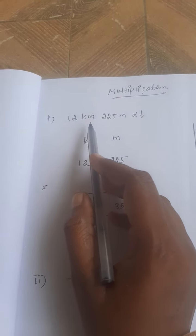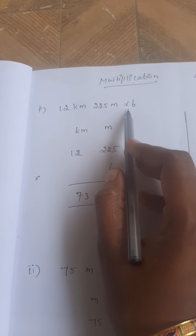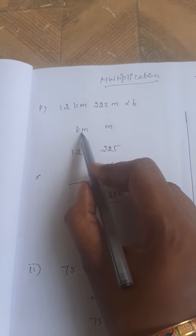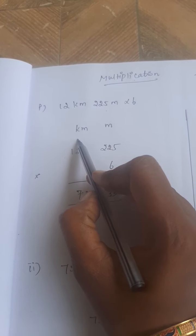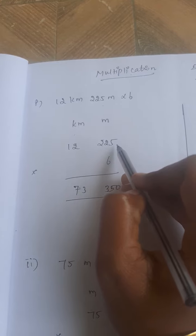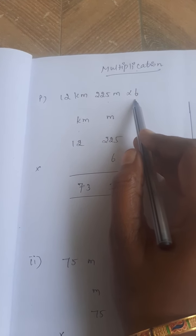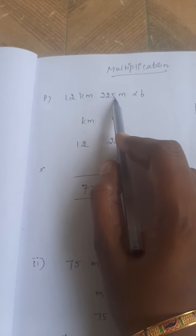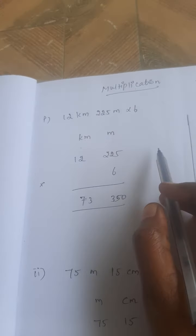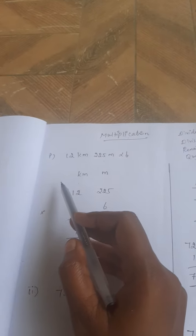For example, 12 kilometer 225 meter into 6. Now I write the place value of that sum: kilometer, then meter, 12, 225. Which number I can multiply? That number we called what is the divisor? This is a dividend, dividend divisor. Now I draw the rough column and I can multiply. What is the first number?